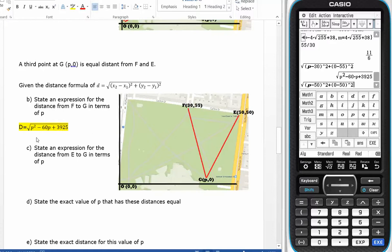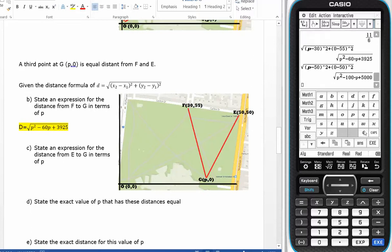So there's my expression for the distance from F to G in terms of P. Okay, for the second one, from E to G, I'm going to call G my second point. So it's going to be P minus 50 squared plus zero minus 50 squared.